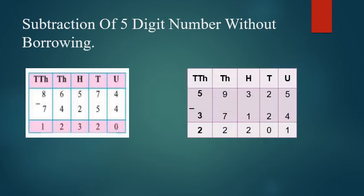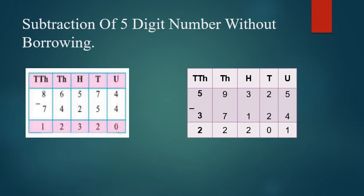Now the next sum is 59,325 minus 37,124. You have to arrange these numbers as you arranged the previous sum and subtract units from units, 10s from 10s, 100s from 100s and so on. Units place: 5 and 4. 5 minus 4, we get 1. 10s place: 2 and 2. 2 minus 2 is 0. 100s place: 3 and 1. 3 minus 1 is 2. 1000s place: 9 and 7. 9 minus 7 is 2. 10,000s place: 5 and 3. 5 minus 3 is 2.